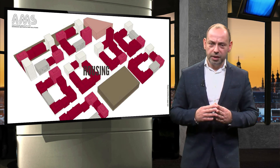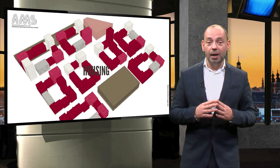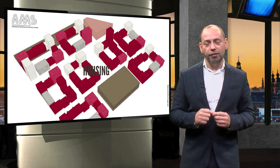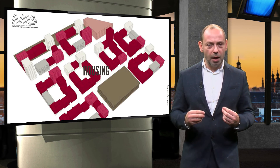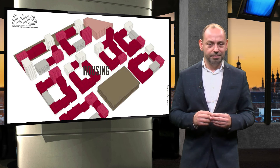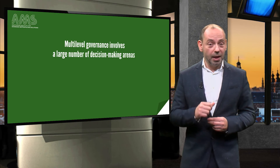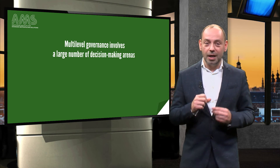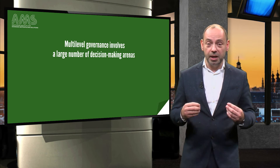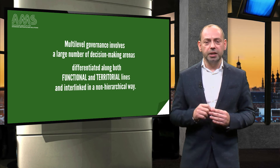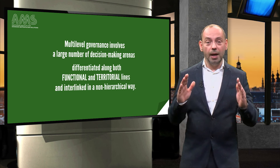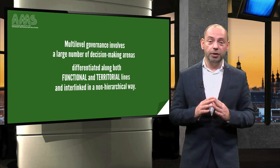Social housing, for example, is coordinated by large and powerful NGOs called housing corporations that have the delivery of affordable, high quality housing as their core mission. In short, as Eberlein and Kevart point out, multi-level governance involves a large number of decision-making arenas, differentiated along both functional and territorial lines, and interlinked in a non-hierarchical way.